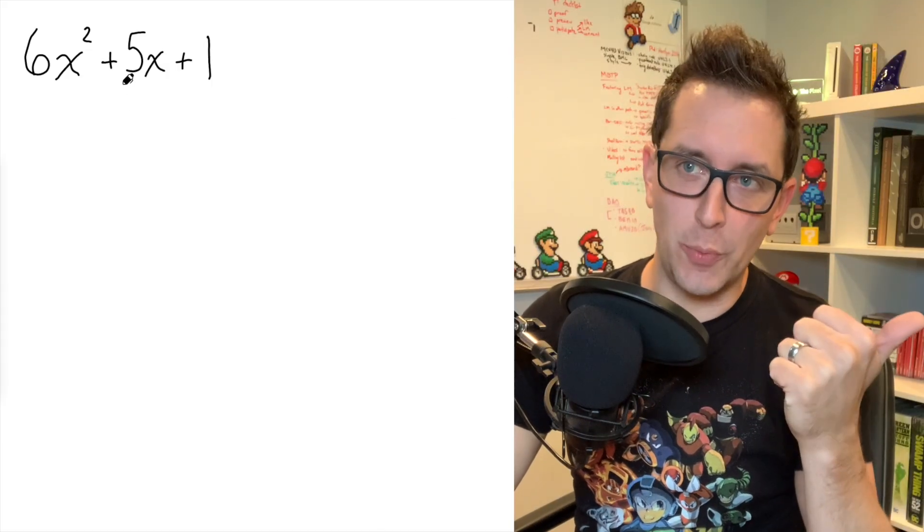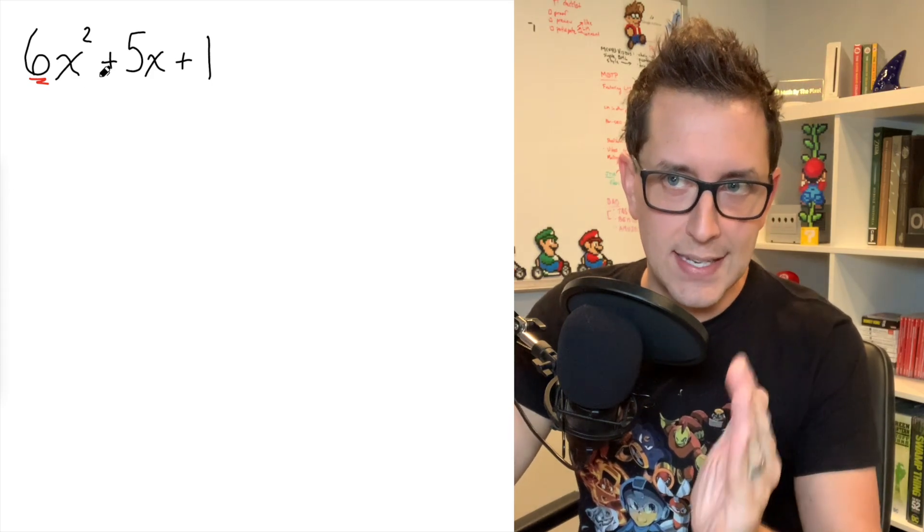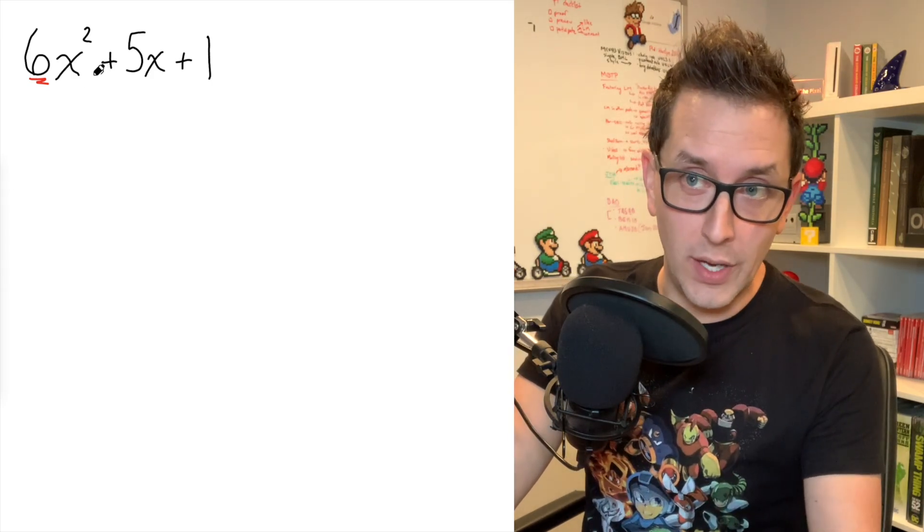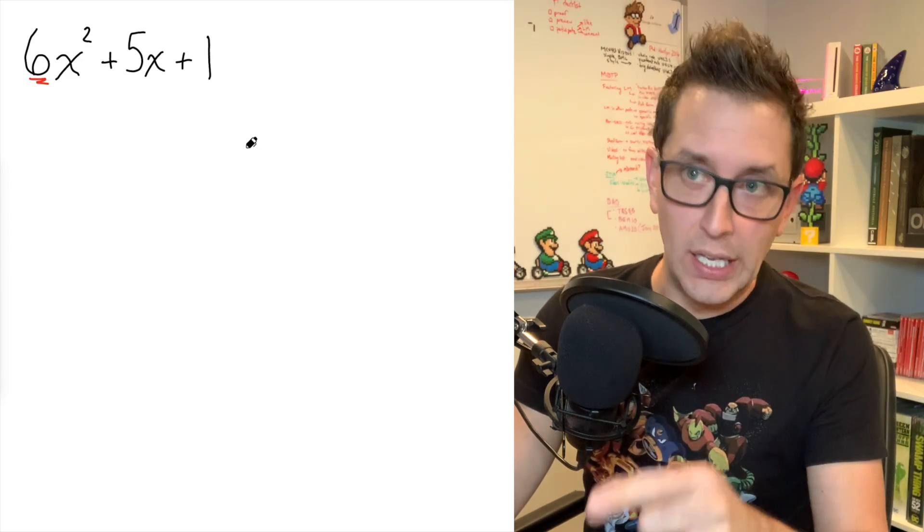All right, so let's start by taking a look at this trinomial right here. And you can see right away that I'm working with a trinomial that does not have an A value that is equal to 1. The number in front of x squared is not 1. That's going to tell us that we can use this crazy strategy.